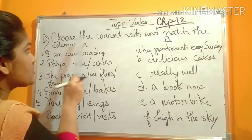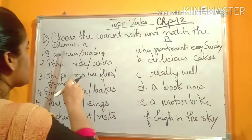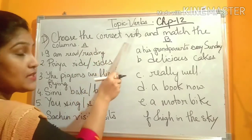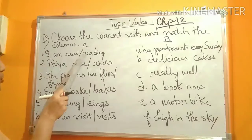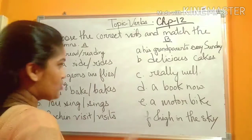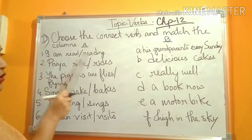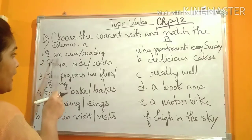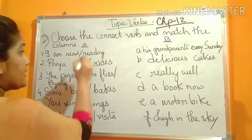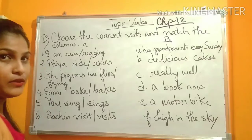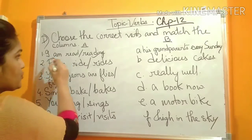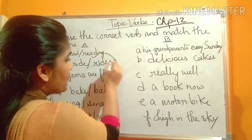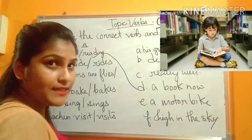Now question number D: Choose the correct verb and match the columns. This is column A and this is column B. You have to first choose the correct verb, then match it. Number one: I am — reader or reading? You have two words. I am read or reading? You have reading. So this will be the correct one — tick mark it. Then match: I am reading a book now.